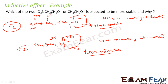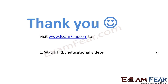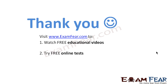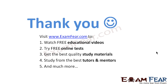So in this case, the negative charge on oxygen in the first molecule was reduced by the NO2 group, making it stable. In the second molecule, the methyl/ethyl group added more electron density, making it very negative and thus less stable. Thank you — visit examfear.com to watch free educational videos, try free online tests, get the best quality study materials, and study from the best tutors and mentors.